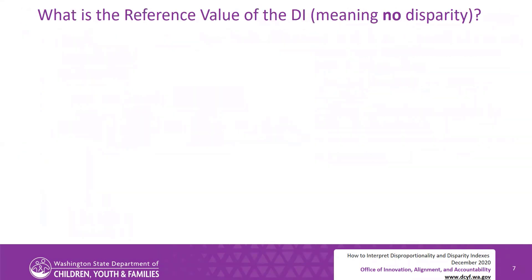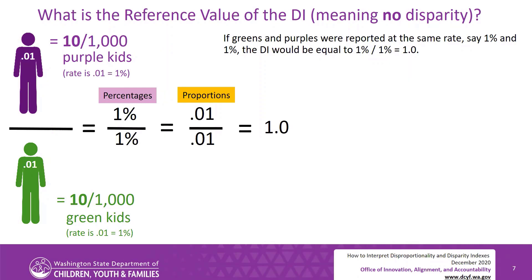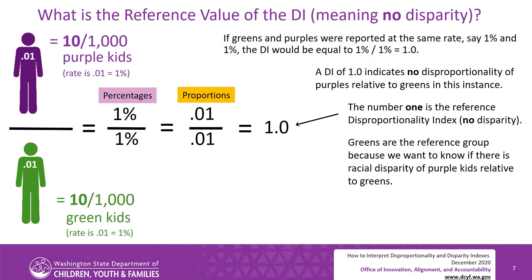What is the reference value of the DI, meaning no disparity? If greens and purples were reported at the same rate — say 1% and 1% — the DI would equal 1% divided by 1%, which equals 1. A DI of 1 indicates no disproportionality of purples relative to greens. The number 1 is the reference disproportionality index, meaning no disparity. Greens are the reference group because we want to know if there is racial disparity of purple kids relative to greens.